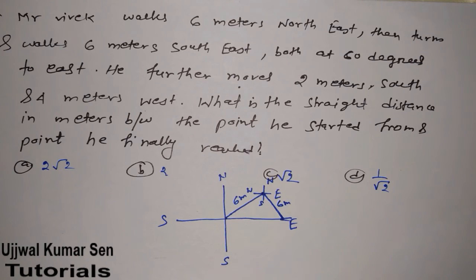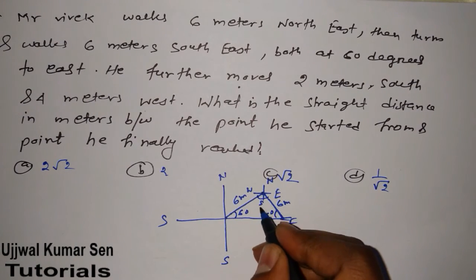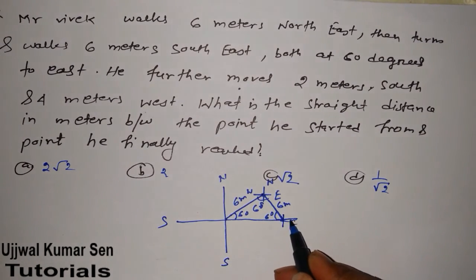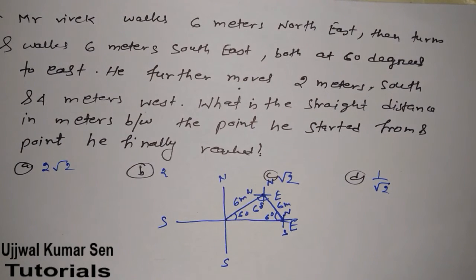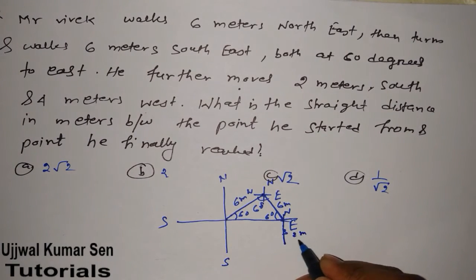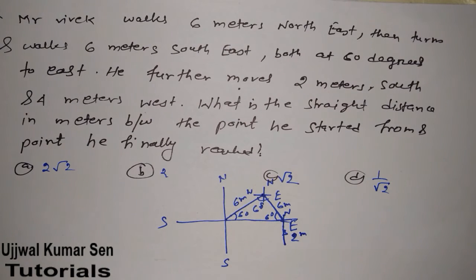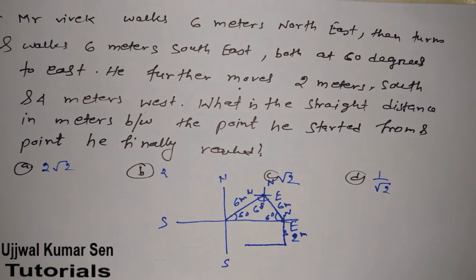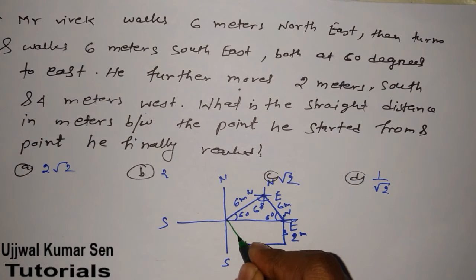He walks the same distance on each side. Both paths are at 60 degrees to the east, so each angle is 60 degrees. Since the total angles in a triangle sum to 180, each angle is 60 degrees. He then further moves two meters south and four meters west. We have to find the straight-line distance in meters between the point he started from and the point he finally reached.